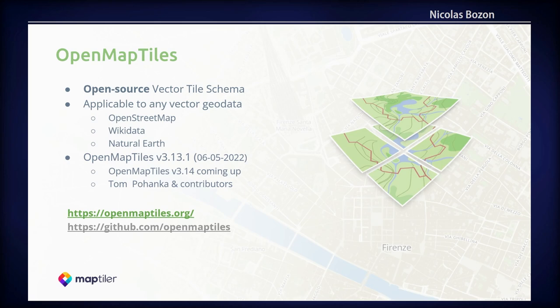There is also the OpenStreetMap vector tile schema that defines which data is included in the tiles. All our maps at MapTiler rely on implementing this schema. The OpenMapTiles project allows you to select which data to include in the tiles, for which zoom levels, and how they would be generalized. It also defines the class names used for cartography. OpenMapTiles uses OpenStreetMap, Natural Earth, and Wikidata by default, but this can be applied to any vector GIS data.